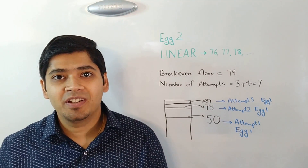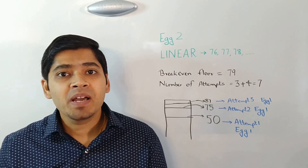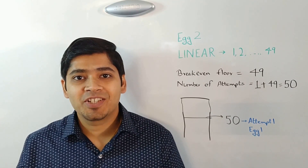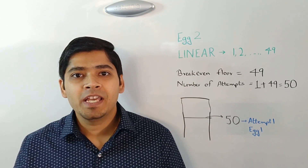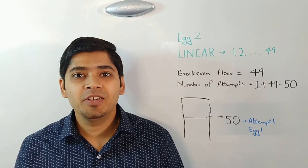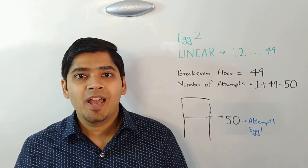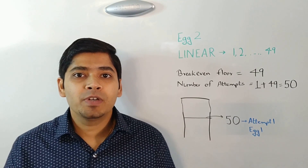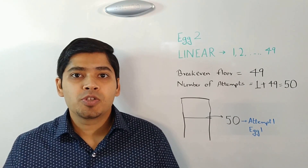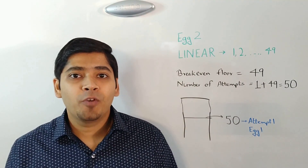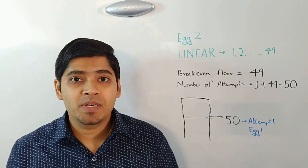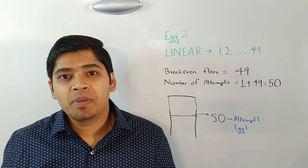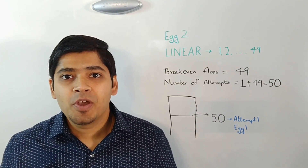Now let's get back to our question — we need to minimize the total number of attempts in the worst-case scenario. In the binary search approach, the worst case is when the break-even floor is the 49th floor. You drop egg 1 from the 50th floor and it breaks, so you start egg 2 from the 1st floor up to the 49th floor. That's 1 attempt for egg 1 and 49 attempts for egg 2, a total of 50 attempts. As you can guess, 50 attempts in the worst case might not be the best answer in an interview.